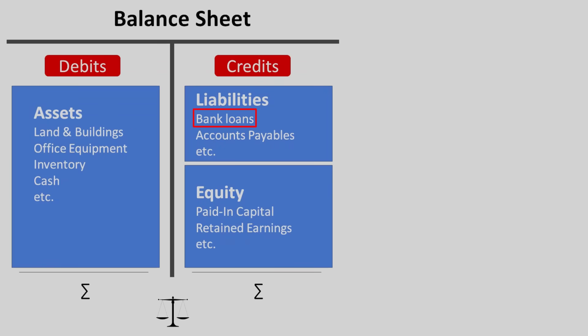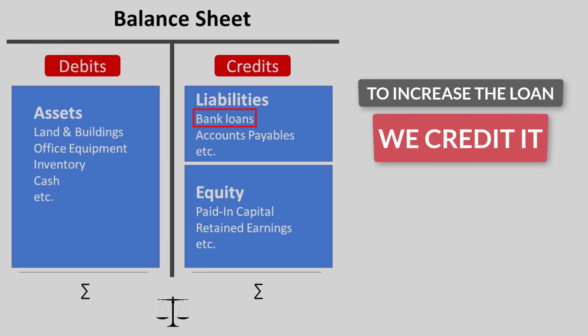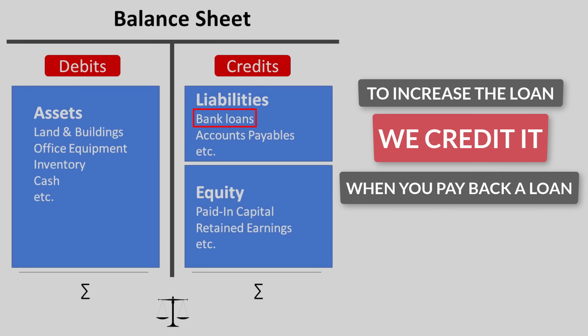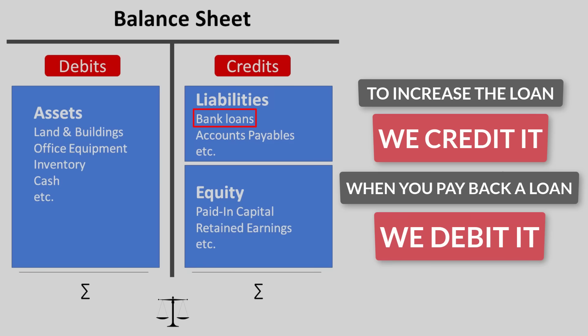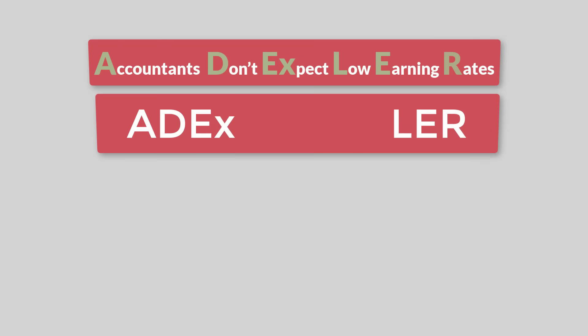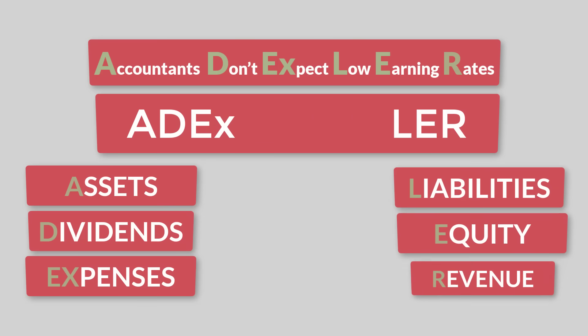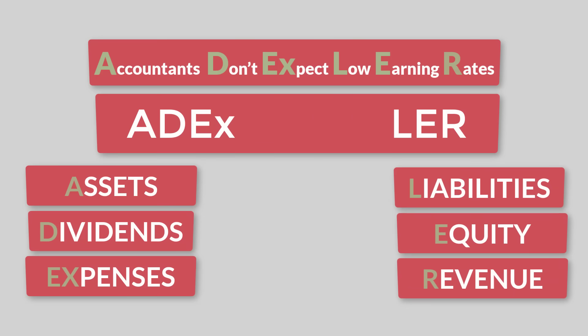LER — liabilities, equity, revenue — are credits. Their balance increases with credits and decreases with debits. Take a loan for example, which is a liability. When you take out a higher loan, you credit the loan account. When you pay back a loan, you debit the loan account, which reduces its balance. So that's really all there is to it. Just remember: accountants don't expect low earning rates — ADEXLER. Assets, dividends, expenses, liabilities, equity, and revenue. This will help you determine debit and credit accounts. Just practice it and it will eventually become second nature.